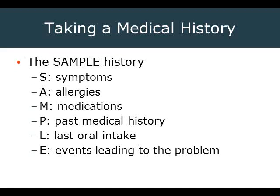The SAMPLE history: S is signs and symptoms — signs are things you can see, symptoms are things the patient tells you. A is allergies — medications, foods, and environmental allergens. M is medications — not only prescriptions but over-the-counter, herbal, holistic, and illicit or illegal substances. P is past medical history — specifically pertinent past medical history. We always want to know about heart problems, lung problems, diabetes, and stroke history. We don't need every surgical detail if it's not relevant to the current complaint.